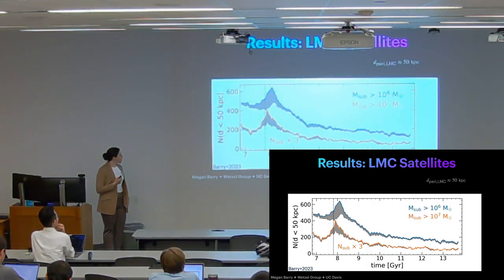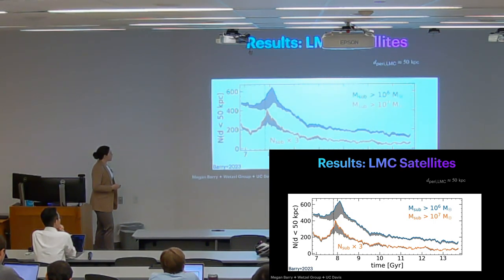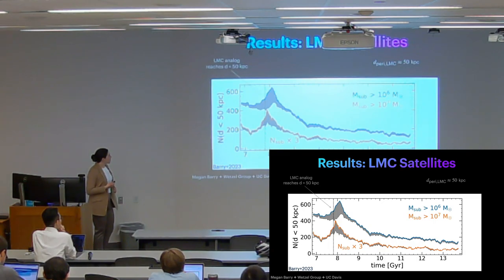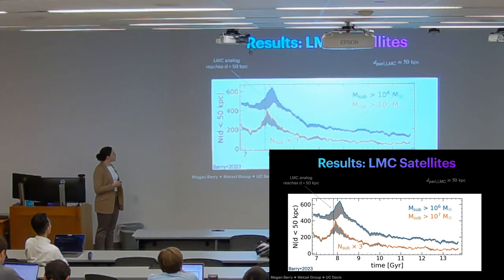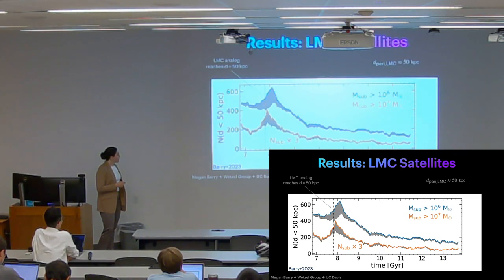And we checked if it increased the numbers of subhalos in the inner galaxy. So this shows the total number of subhalos—also points out that the peri center distance of the LMC is about 50 kiloparsecs—so this shows the total number of subhalos within that range, within a spherical shell of 50 kiloparsecs, over time. And this dotted line shows the time at which our identified LMC analog reached a distance of 50 kiloparsecs. So you can see that in this simulation, after that time, there is a bump, a significant bump in the subhalo population.